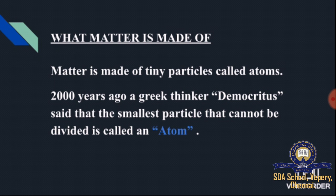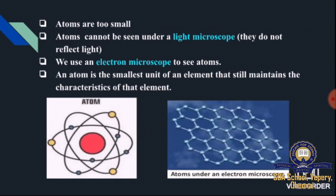Now, what is matter made up of? Matter is made up of tiny particles called atoms. About 2000 years ago, a great thinker known as Democritus said the smallest particle that cannot be divided is called an atom. Atoms are too small to be seen under a light microscope as they do not reflect light. We can use an electron microscope to see an atom, as shown in this image. An atom is the smallest unit of an element that still maintains the characteristics of that element.